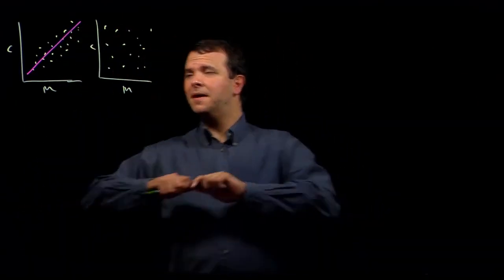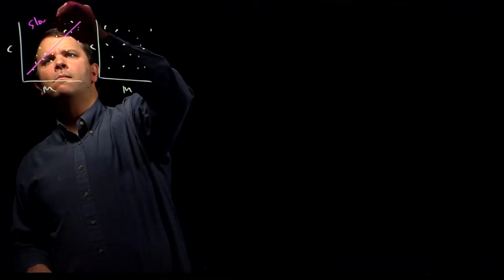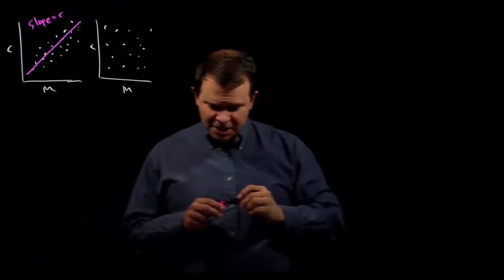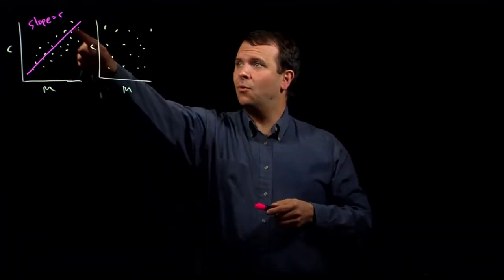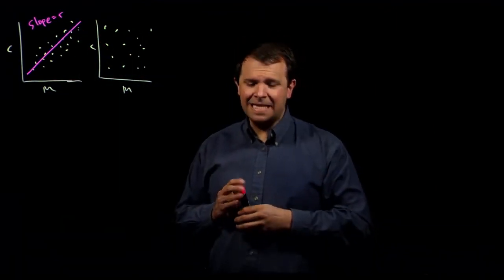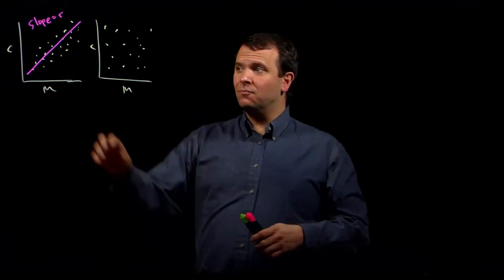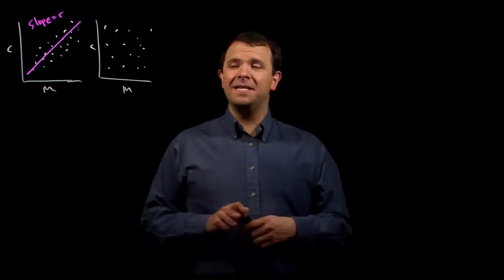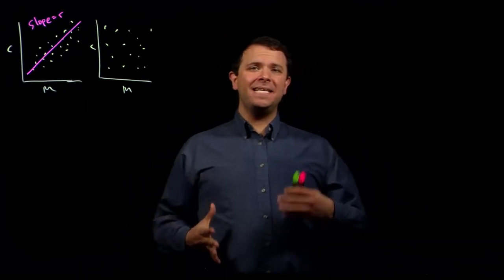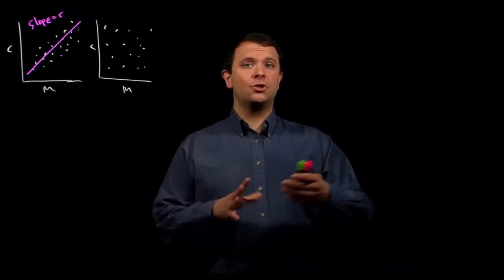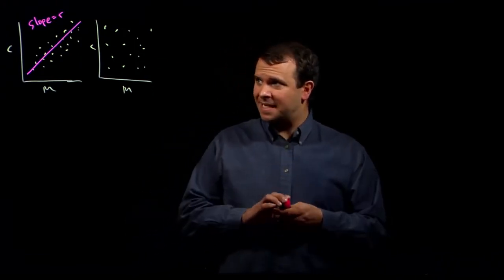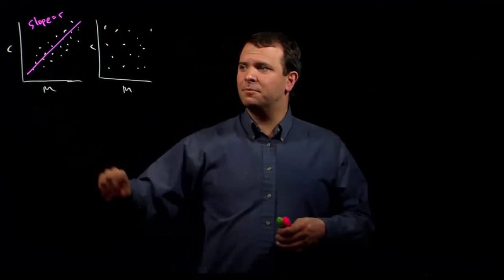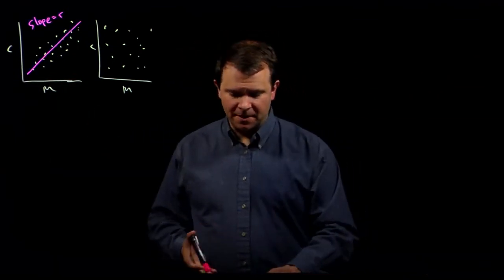The slope of this line we call the correlation coefficient or r. And it measures how strongly related these two different distributions are. How easy it is to predict, how much strength you have in predicting a child's milk production from the milk production of the mother.